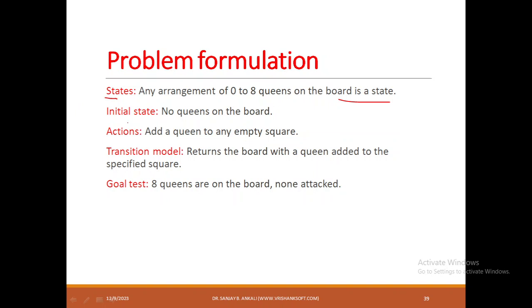What are the actions? The action is you have to pick a queen and place it in an empty square. You have to see that the square is empty, and at the same time you have to ensure that there is no previous queen in the same row, same column, or diagonally.